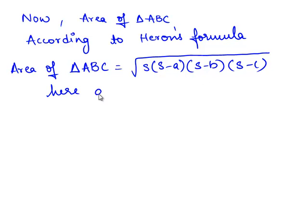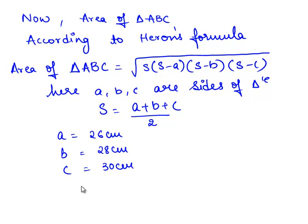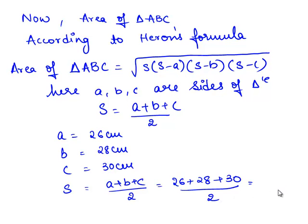Here, A, B and C are the sides of the triangle, and S is the semi-perimeter, which is (A plus B plus C) divided by 2. So let A equal 26 cm, B equal 28 cm, and C equal 30 cm. We shall find the semi-perimeter S, which equals (26 plus 28 plus 30) divided by 2, that is 84 divided by 2. Therefore, S is equal to 42 cm.